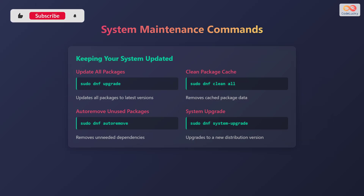Let's explore system maintenance commands. To update all packages to the latest versions, use sudo dnf upgrade. To clean the package cache and remove cached package data, use sudo dnf clean all. To automatically remove unused dependencies, use sudo dnf autoremove. To upgrade to a new distribution version, use sudo dnf system-upgrade.